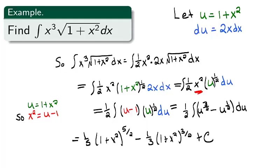Distributing the ½ and replacing u with 1 + x², we get that this is equal to ⅕(1 + x²)^(5/2) minus ⅓(1 + x²)^(3/2) + c.